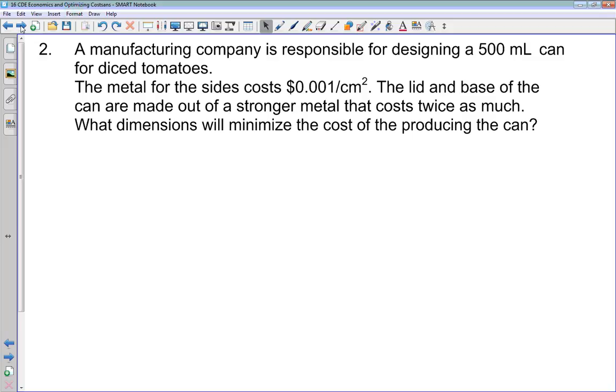In optimization questions, the first question we always ask ourselves is what is the thing that we need to optimize? What is the quantity that we need to optimize? In these questions, it's always going to be the cost. The challenge is to figure out a function that tells us the cost of producing the can. So to build this can, we need to make the sides and the top out of metal. The cost is going to be related to the surface area that we have of this can.